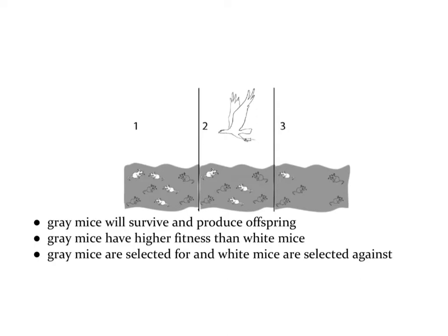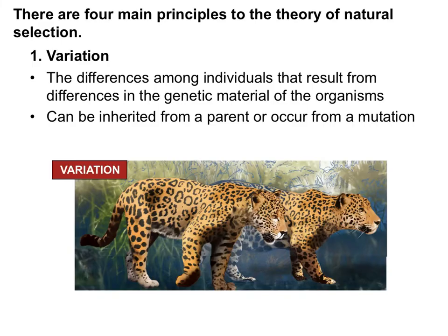Here's a simple example of how natural selection works in the environment. We have a population of gray and white mice on a gray background. When a bird comes by, it will easily be able to pick out the white mice. The gray mice have the beneficial adaptation — they will survive and produce more offspring. We say gray mice have higher fitness than white mice, or that gray mice are selected for and white mice are selected against.